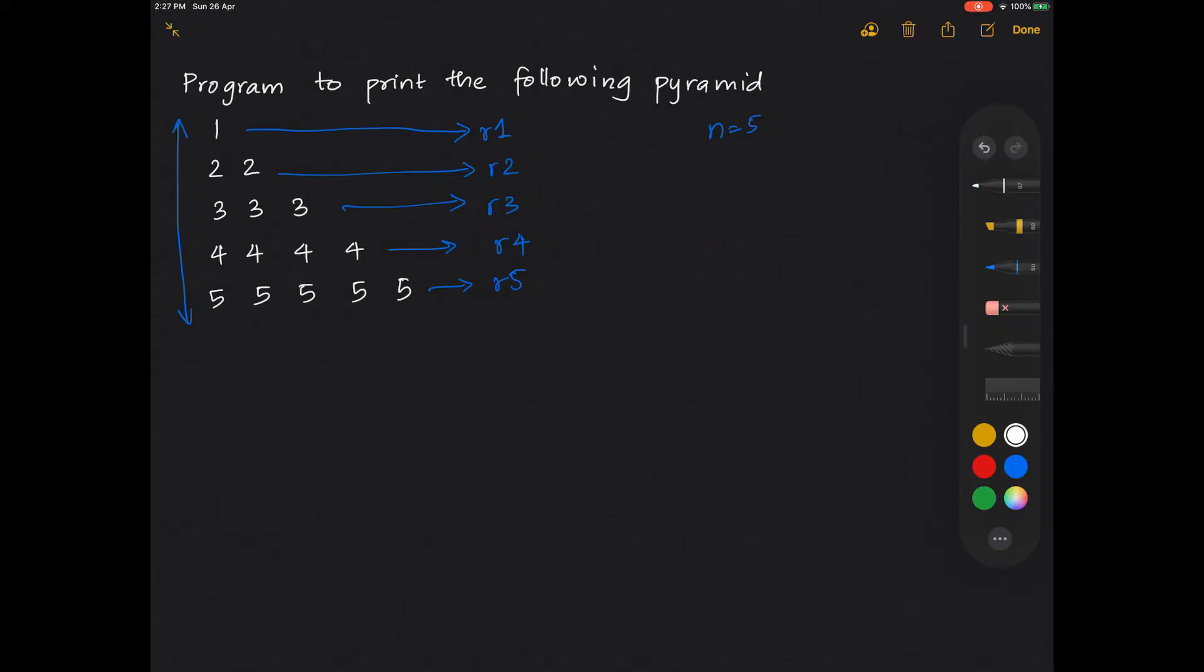So definitely the start of the loop is starting from i equals 1, i less than or equal to n, and i plus plus. Now look at the values inside each row number.